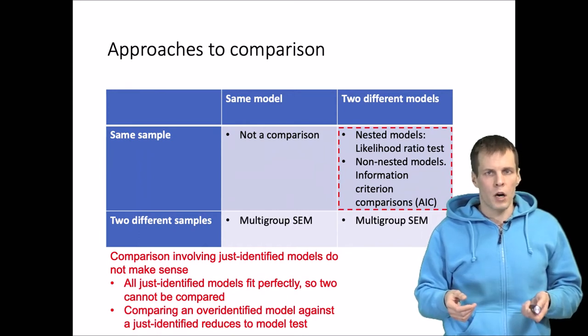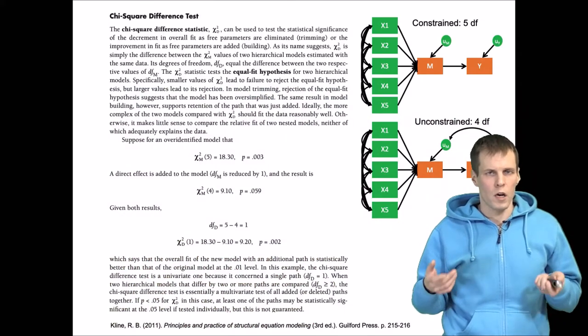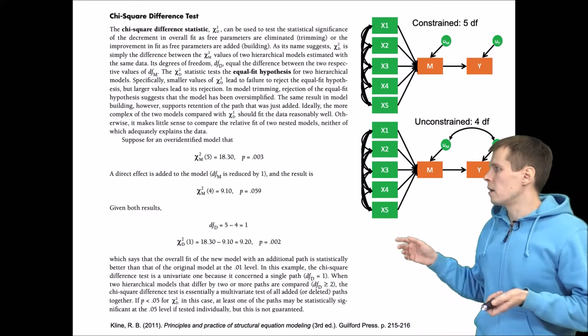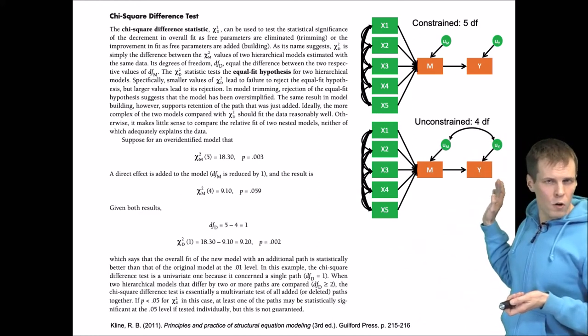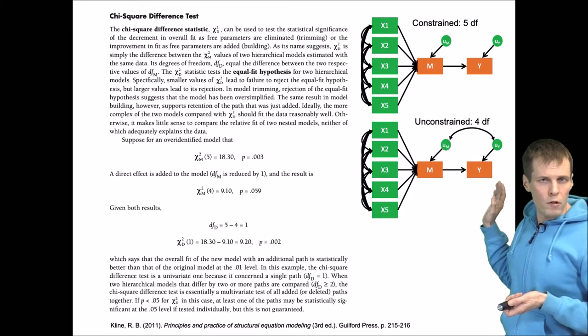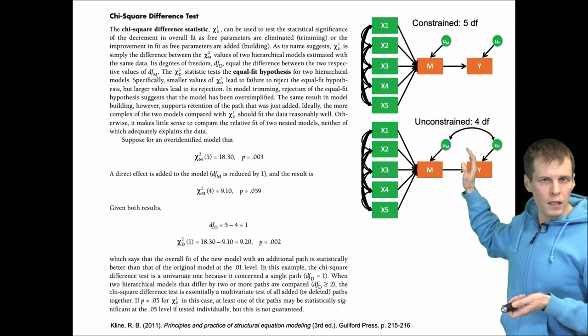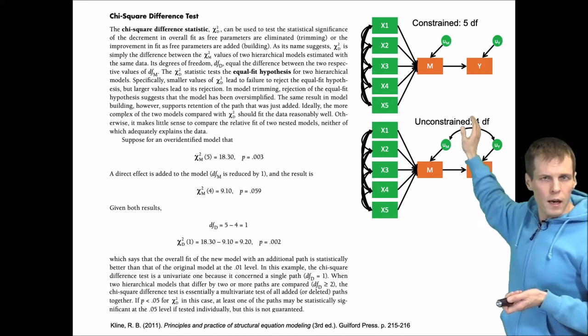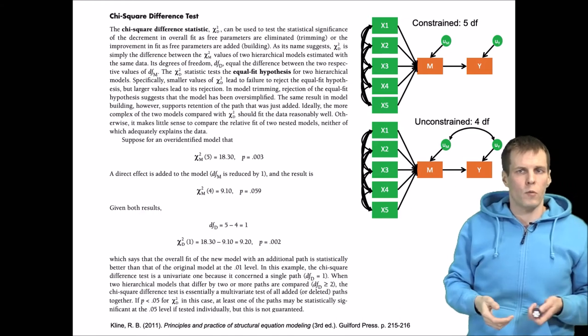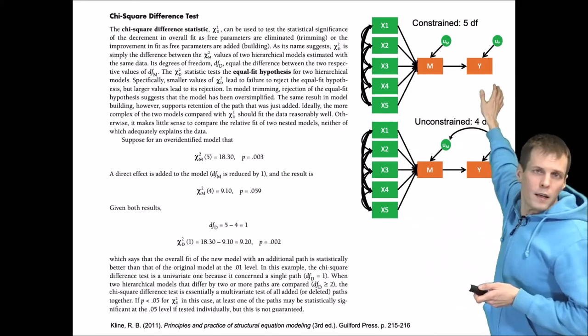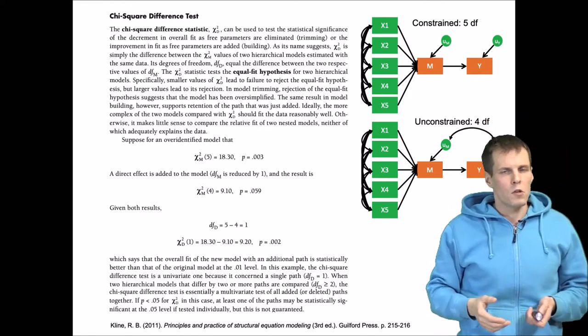If you have nested models, then we do a likelihood ratio test or chi-square difference test. Here we have two example models. We have this model here—this is the unconstrained model with four degrees of freedom. It's a full mediation model where we allow endogeneity. These errors are correlated. Then we have a full mediation model that doesn't allow endogeneity, so we assume that M and Y don't have any common causes excluded from the model.